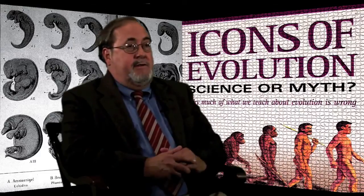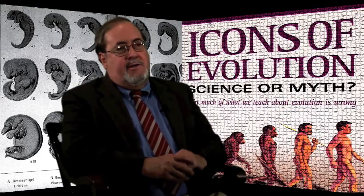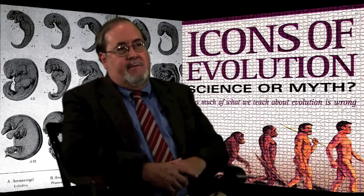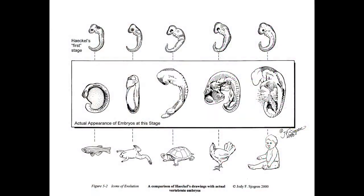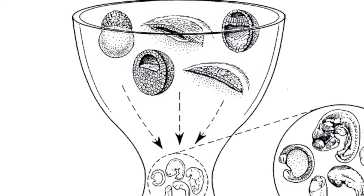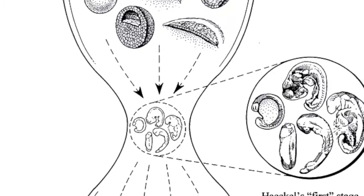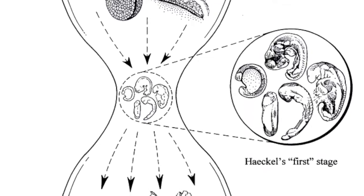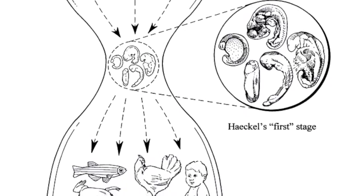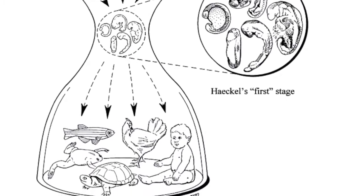For me as a scientist, the worst thing about Haeckel's drawings is that he totally leaves out the earliest stages of embryo development. The embryos he portrayed as being the earliest are actually midway through development. When you go back and look at the earliest stages of fishes, amphibians, birds, and mammals, they look very, very different. So instead of early similarity developing into later differences, we have early differences converging midway on certain similarities — which he exaggerated — and then diverging again as the embryos develop.